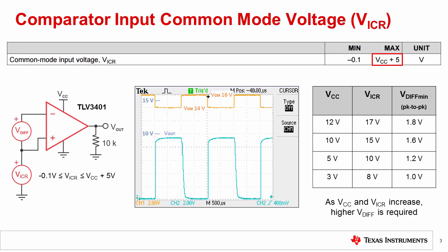For example, the TLV3401 and TLV3701 nanopower comparators offer an input common mode range, VICR, that extends plus 5 volts above the positive supply voltage, VCC.